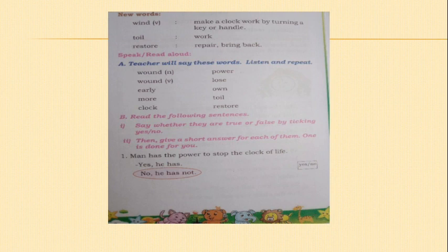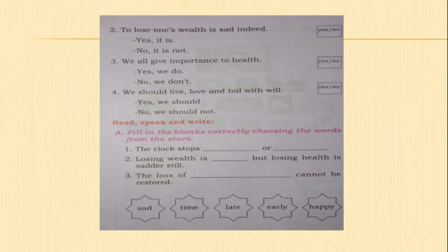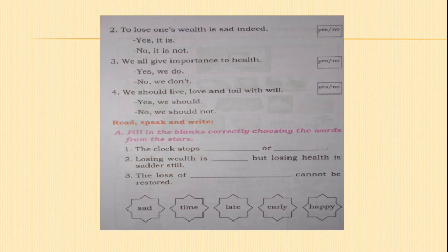Here you can see some sentences and you have to say whether it is true or false by ticking yes or no. The first one: man has the power to stop the clock of life — no, he has not. To lose one's wealth is sad indeed — yes, it is. We all give importance to health — yes, we do. We should live, love and toil with will — yes, we should.